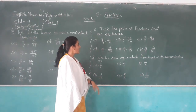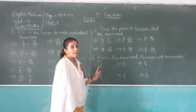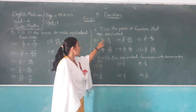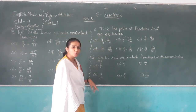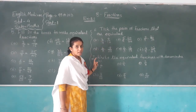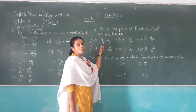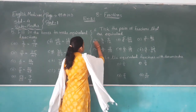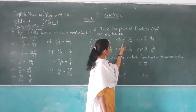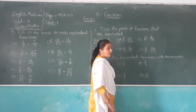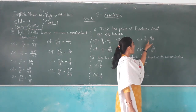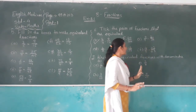Take the pairs of fractions that are equivalent. Three out of four and nine out of twelve — both are equivalent. Check: three times three is nine, four times three is twelve — this pair is equivalent. Five fours are twenty and six fours are twenty-four. Seven threes are twenty-one, but nine fours are thirty-six — this pair is not equivalent.